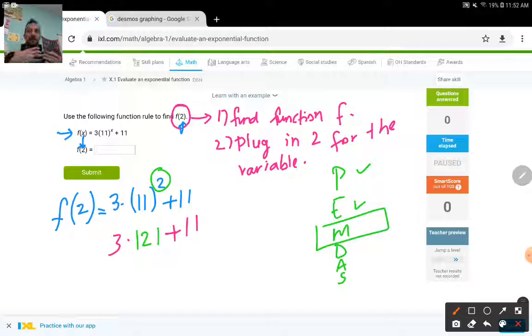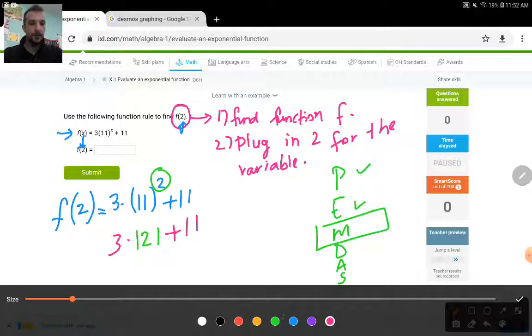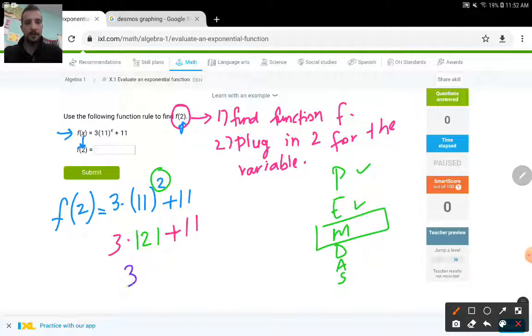So what happens if I multiply 3 times 121? When I multiply 3 times 121 it's going to be 363. Then I will bring down the rest and there's only one thing that I can do. I just will add these together. 363 plus 11 is going to give you 374. That would be my answer for this question.